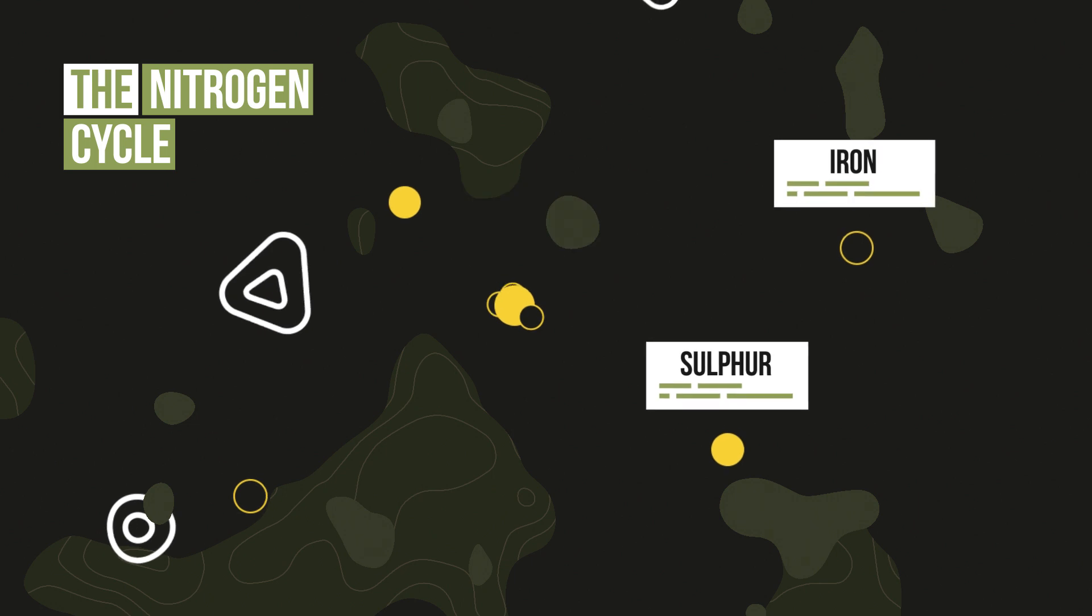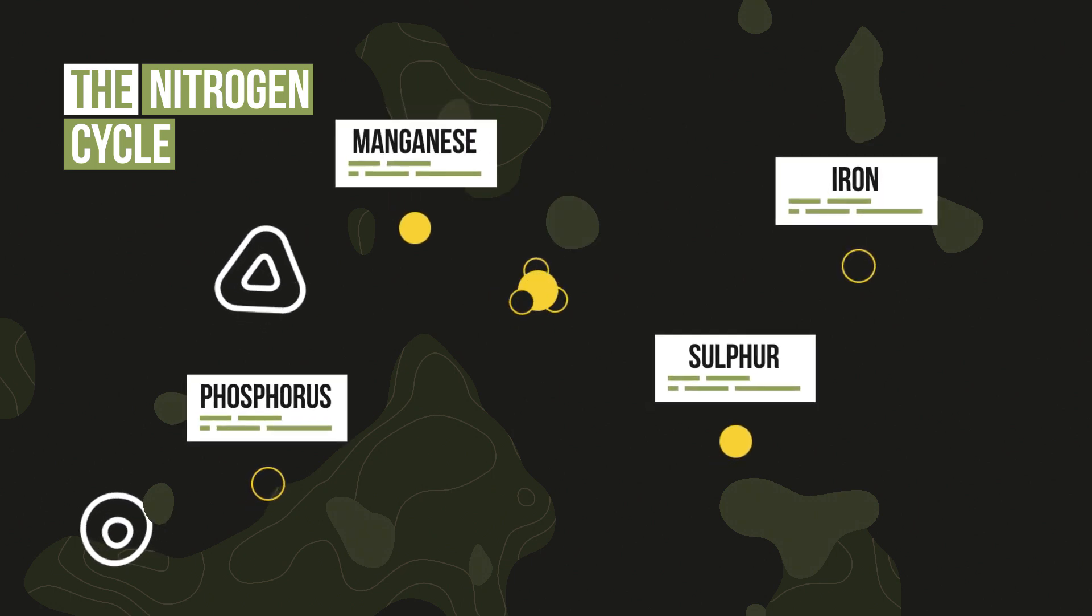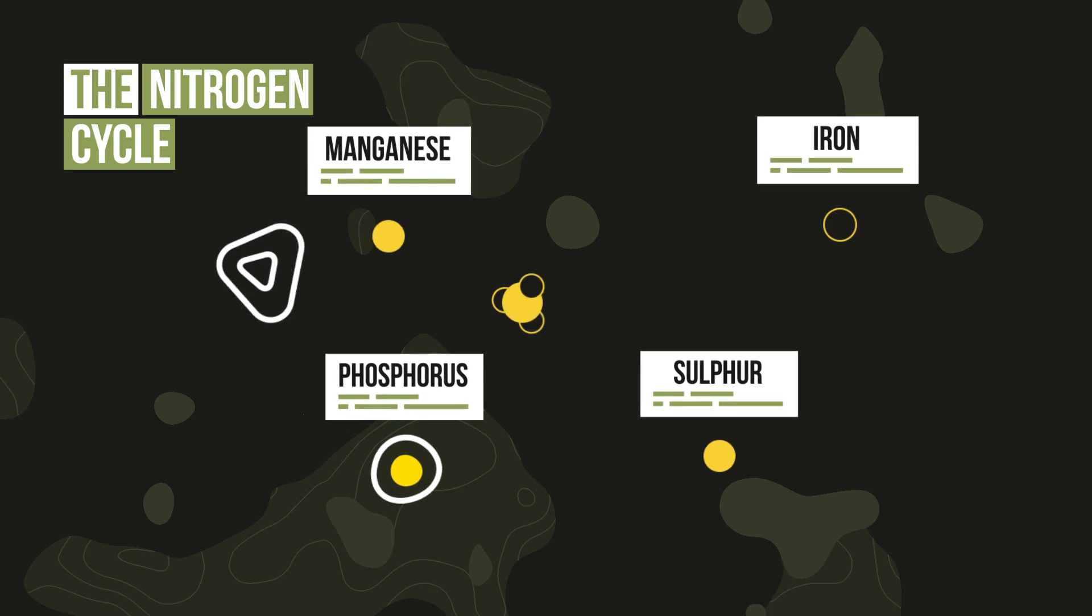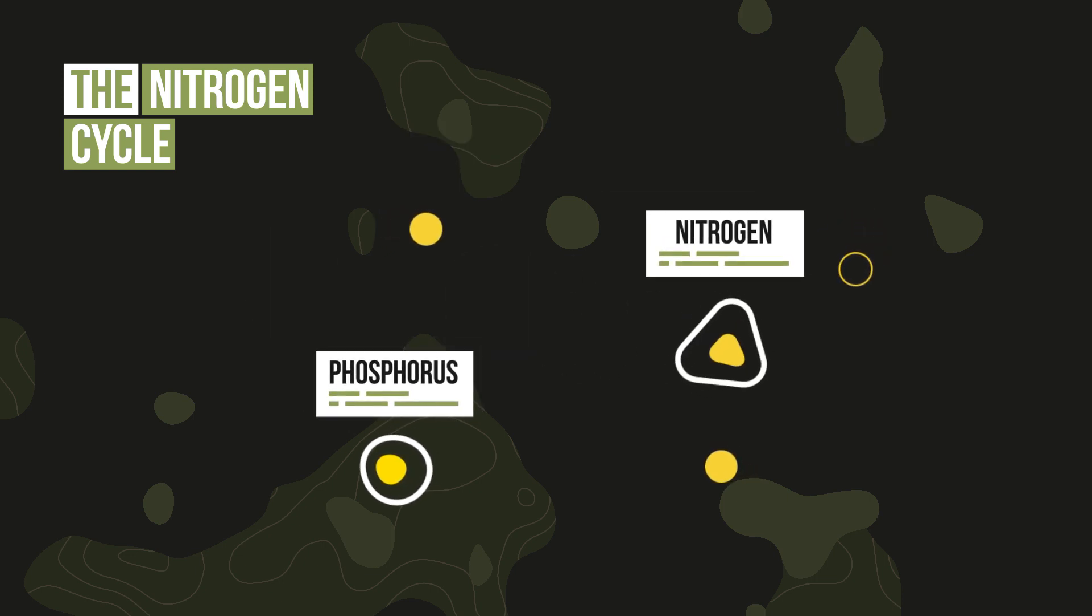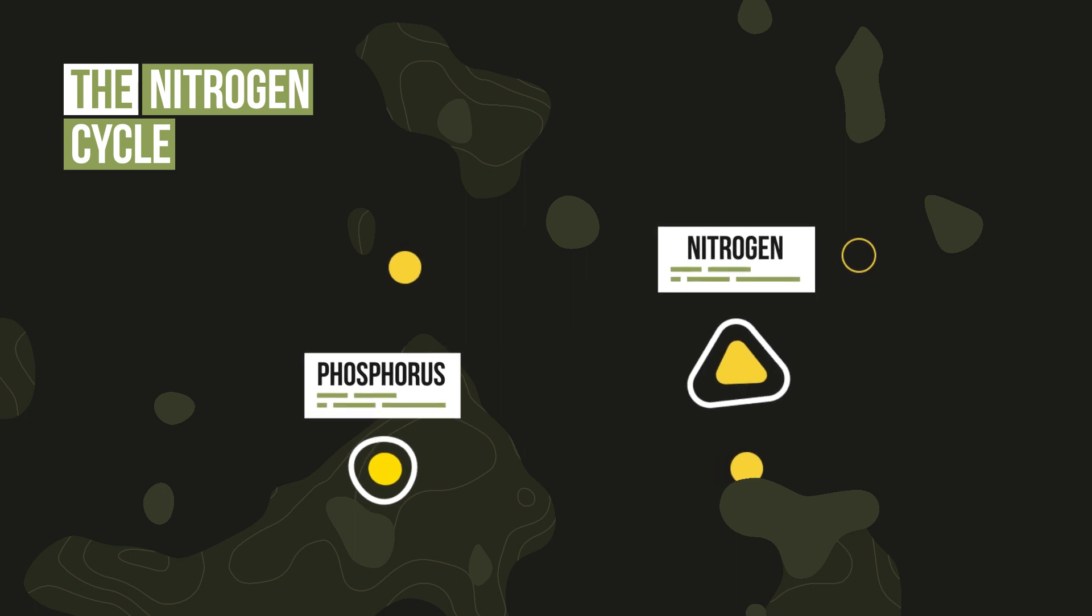Inorganic transformations of sulphur, iron, manganese and phosphorus can provide energy for autotrophic microorganisms. The nitrogen and phosphorus in soil microorganisms are important nutrient pools.